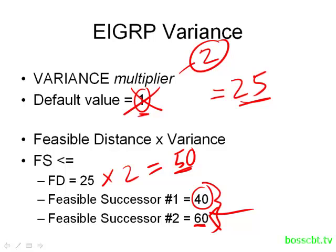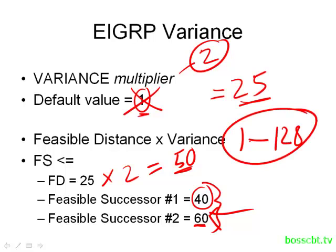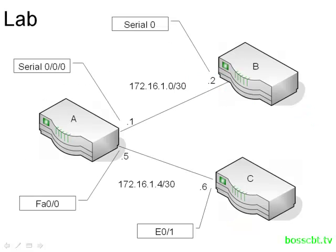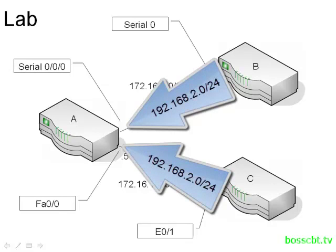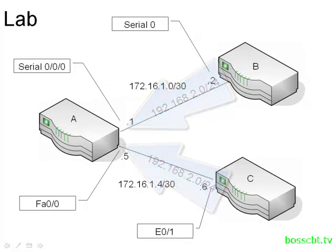That's the basic approach. We can put any value we want in the multiplier between 1 and 128 — that's the range we can use, so we can really extend the range to be inclusive of many routes. In our lab, we're going to be logging into Router A, which has a connection to both Router B and C — these are EIGRP neighbors to Router A. They're each advertising a route to the 192.168.2.0/24 network. By default, Router A chooses Router C, and we'll see the differences in metrics in the EIGRP topology table. We're going to play around with the variance command until Router A load balances between both links, even though they are drastically different in terms of bandwidth.